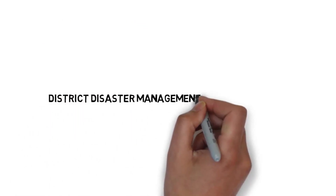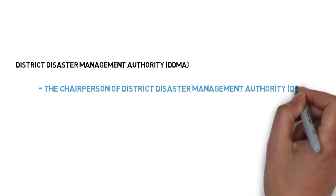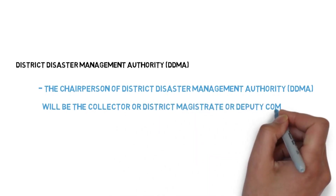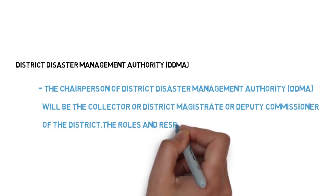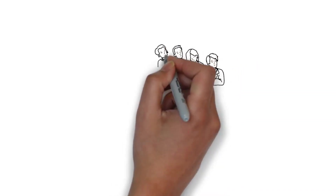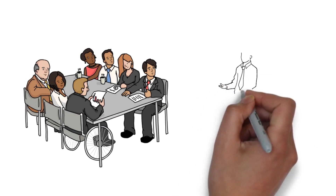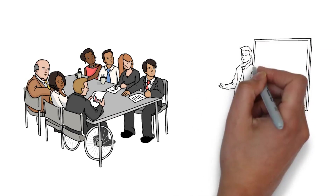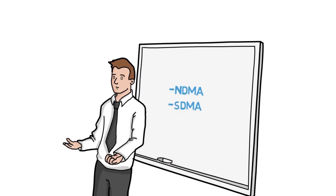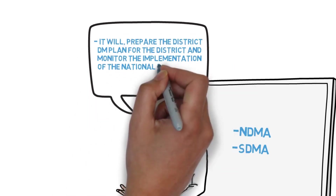Third is the District Disaster Management Authority. The chairperson of this authority will be the Collector, District Magistrate, or Deputy Commissioner of the district. The roles and responsibilities have been elaborated in Section 30 of the Disaster Management Act 2005. It will act as the planning, coordinating, and implementing body for disaster management at the district level, prepare the district disaster management plan, and monitor the implementation of national policies.